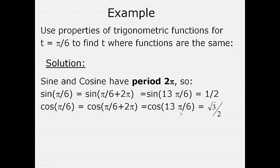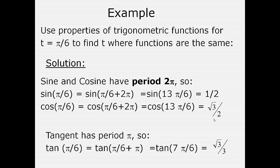For the cosine, the same thing is true. Cosine of pi over 6 is the same as the cosine of pi over 6 plus 2 pi. With a common denominator of 6, pi over 6 plus 12 pi over 6 gives us 13 pi over 6, where the cosine has the same value as at pi over 6, which is the square root of 3 over 2. The tangent has a period of pi, so the tangent of pi over 6 equals the tangent of pi over 6 plus pi. With a common denominator of 6, we get 7 pi over 6, where the tangent equals the square root of 3 over 3, the same as at pi over 6.